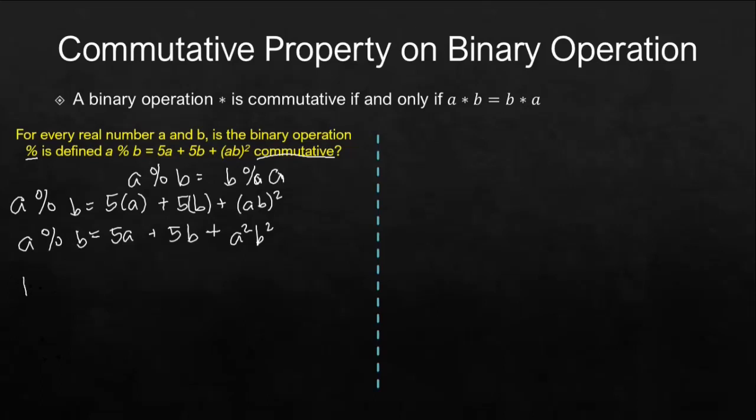Let's now look at b percent a. Again, we will use the first term, multiply it by 5, so this will be 5 times b. And then our second term or second number is a, that will be multiplied by 5 as well. And then multiply the two terms or the two numbers and then square their product. We have b times a squared.